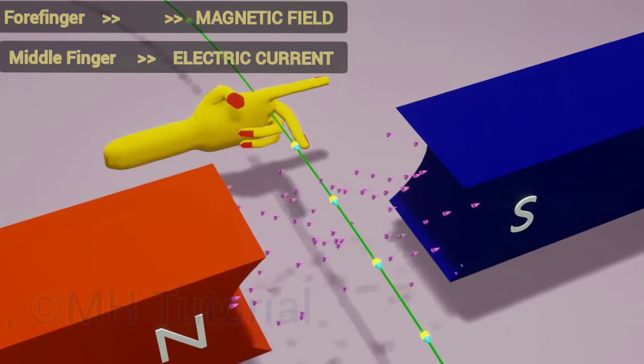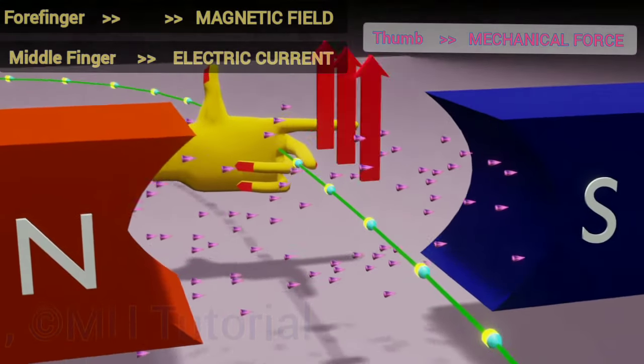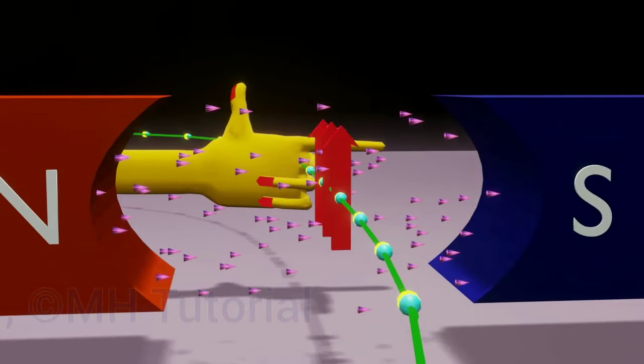Then the thumb will show you the direction of the mechanical force that the current carrying wire will experience. And this force will push the wire out of the magnetic field.